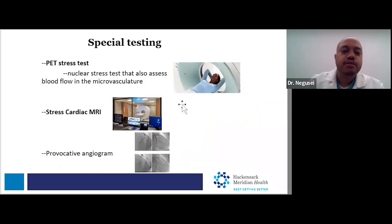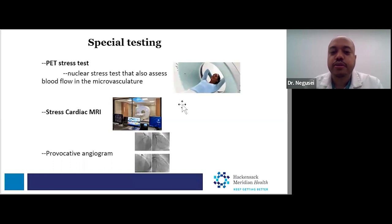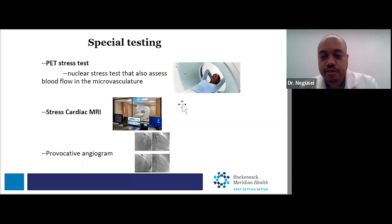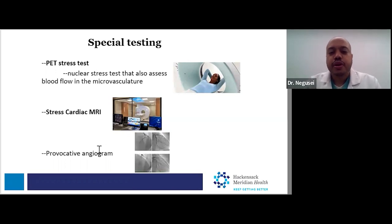Special tests would include an exam called a PET stress test. It's similar to a nuclear stress test in that it looks for changes in blood flow, but on top of that it also measures the amount of blood flow in the three main territories of the heart. It gives added evaluation of the small branches of the arteries that you otherwise wouldn't be able to do with traditional testing. Similarly, with a cardiac MRI you can do a stress MRI to evaluate for changes in blood flow to small branches of the arteries of the heart. As for spasm, that would require an angiogram where you try to provoke the spasm by giving medications that cause the arteries of the heart to become a little bit more irritable.